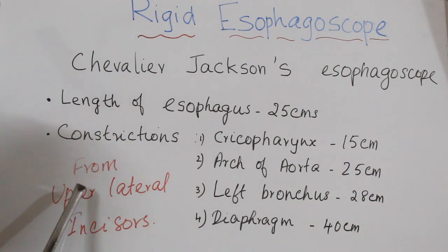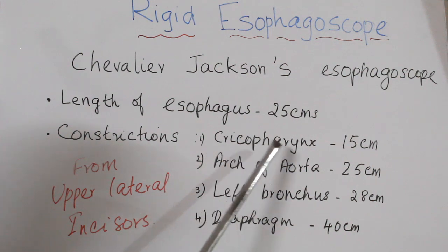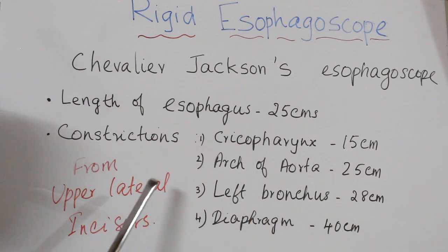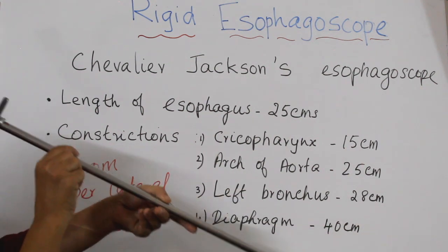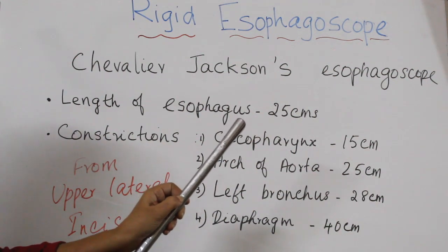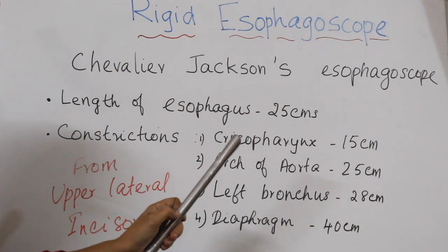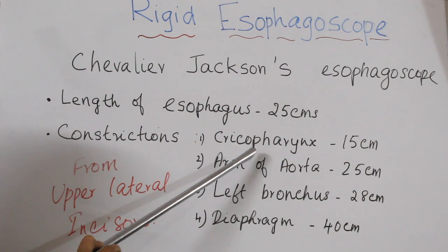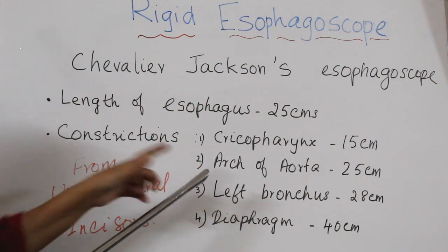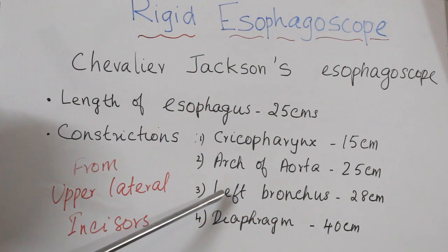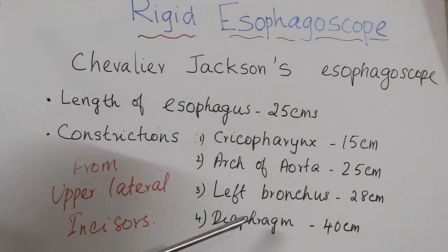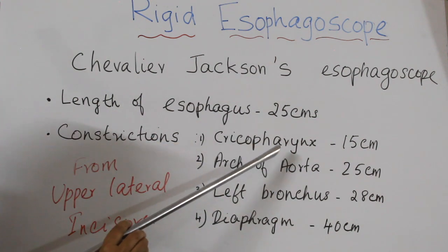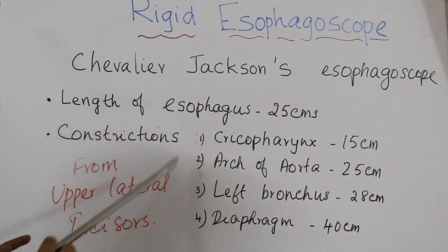There are four constrictions, measured from the upper lateral incisor teeth. The first is the cricopharynx at 15 cm. When the scope is introduced to the 15 cm mark, the tip is at the cricopharynx. At 25 cm, the tip is at the arch of the aorta. At 28 cm, the tip is at the left bronchus. The fourth constriction is at the diaphragm, at 40 cm from the upper lateral incisor.